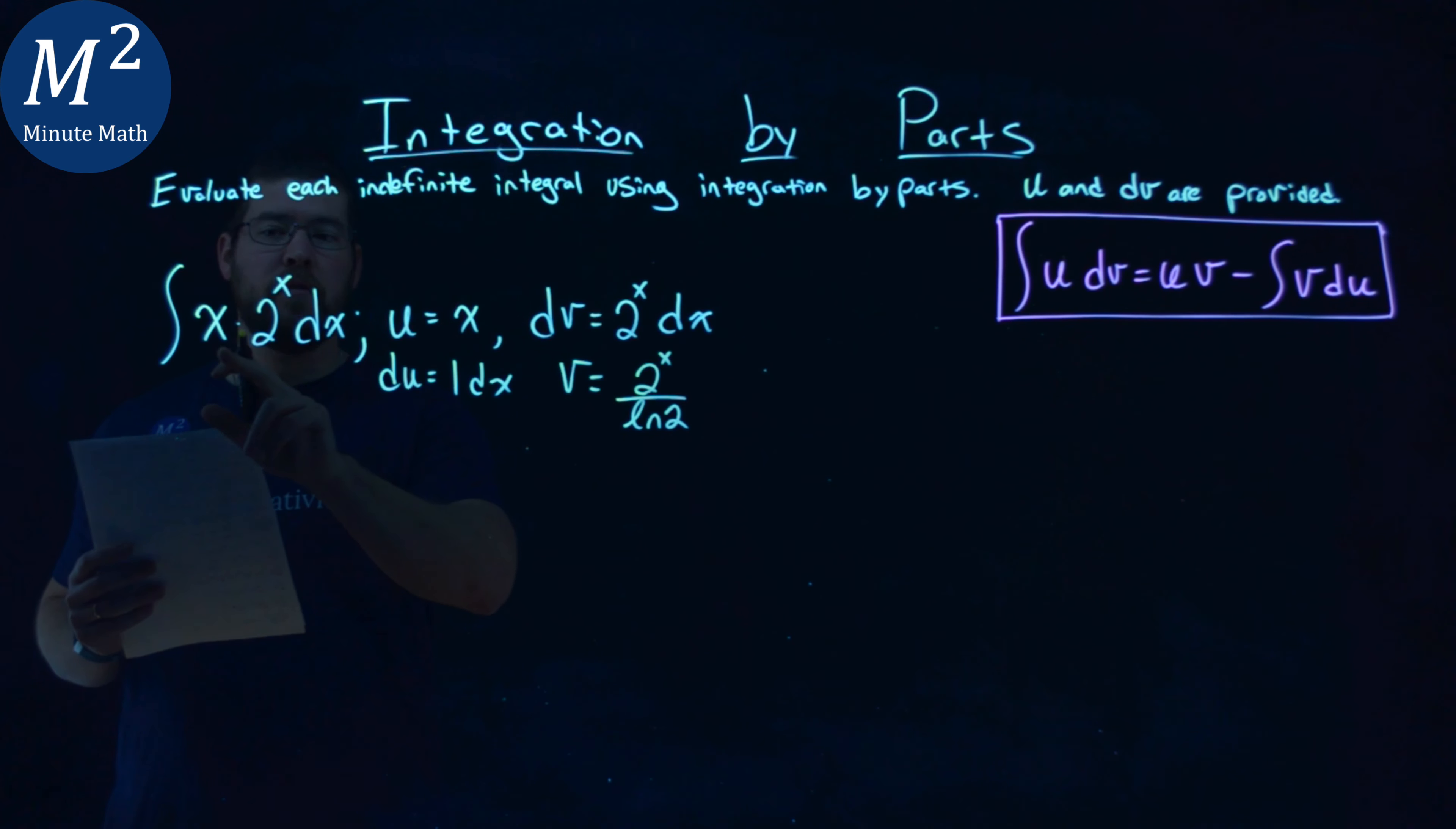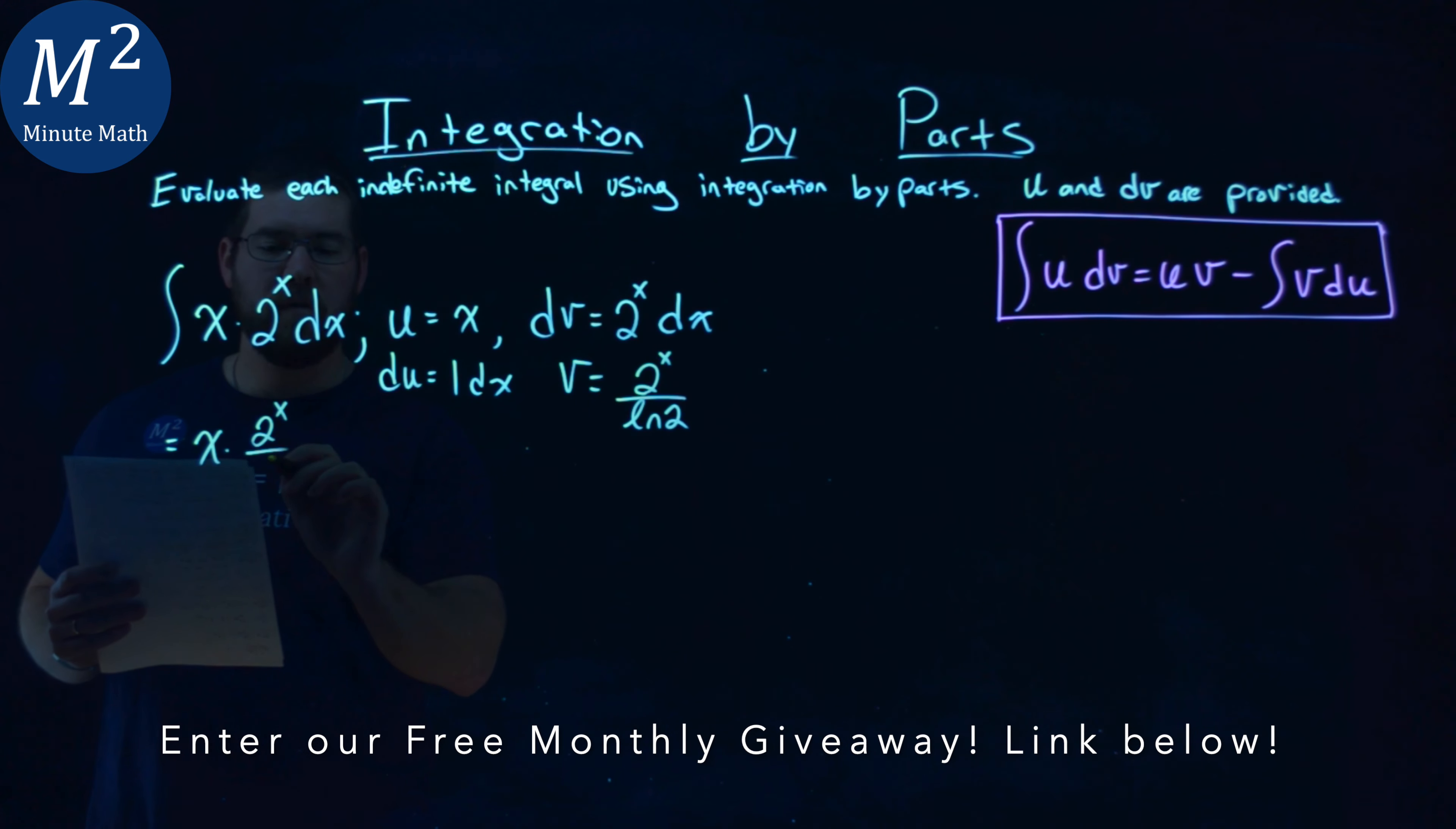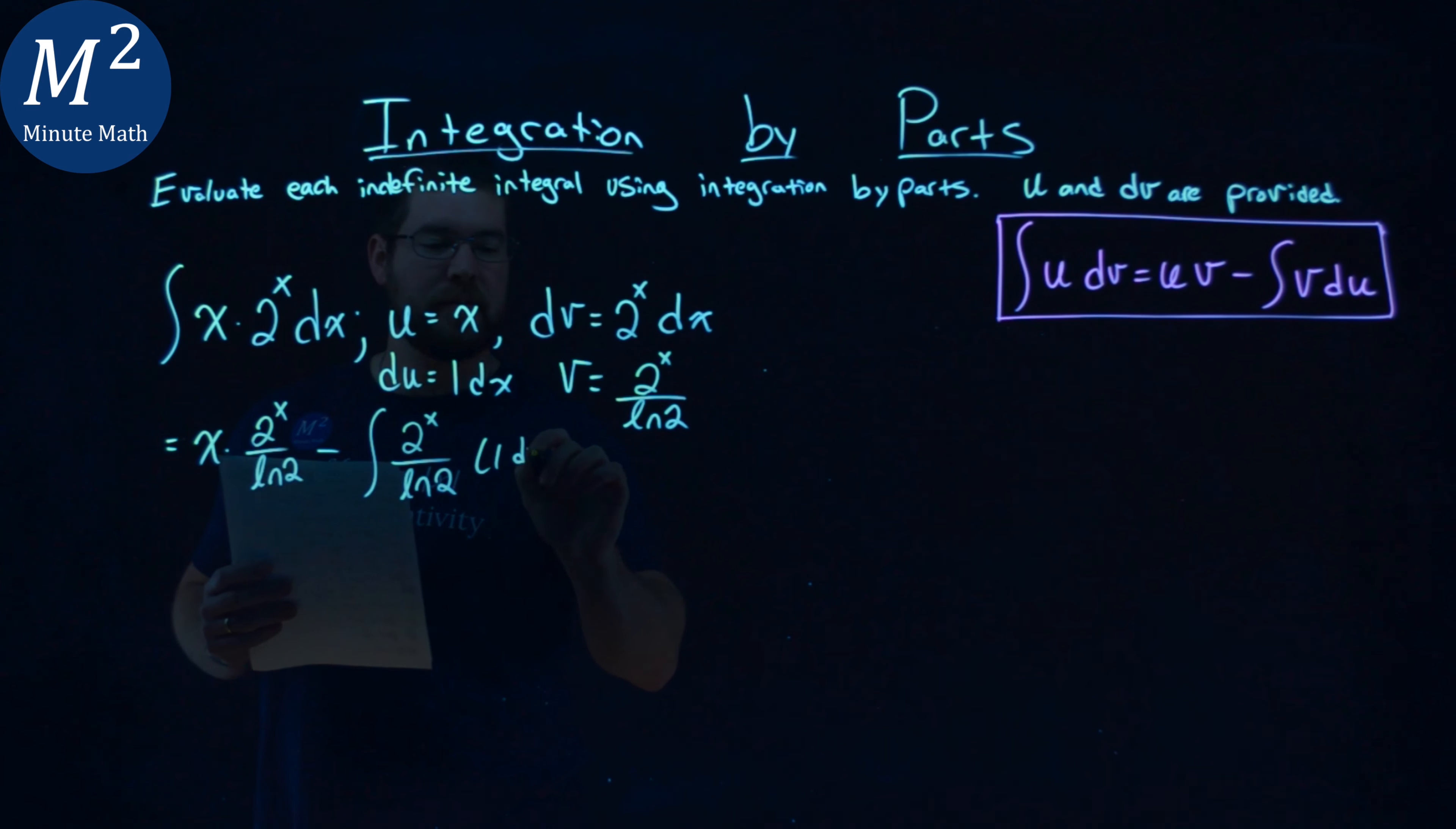So, our u value being x, and dv right here is 2 to the x dx. We say u is x times our v value, which is 2 to the x over the natural log of 2, minus the integral of our v value, which is 2 to the x over natural log of 2, du, which is 1 dx.